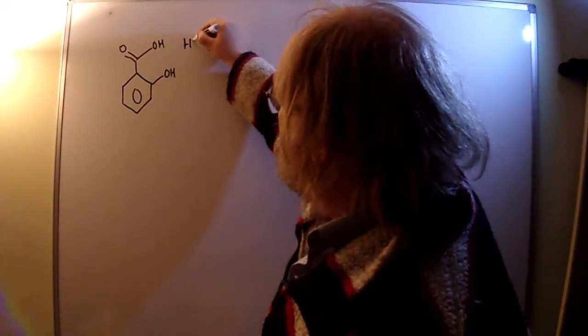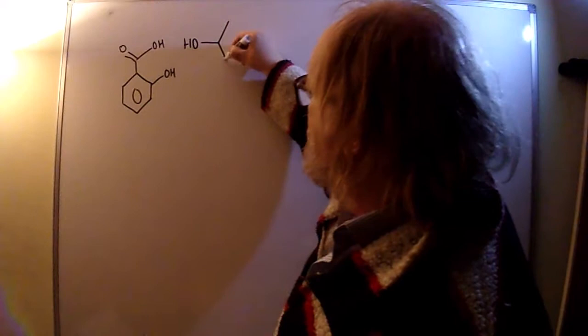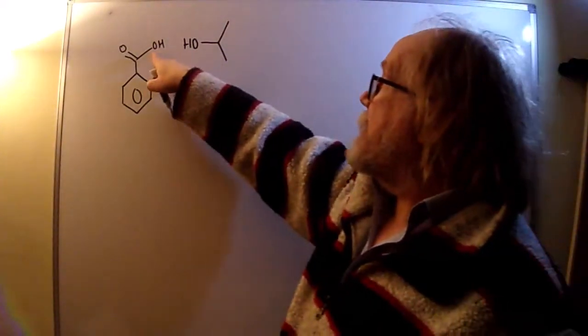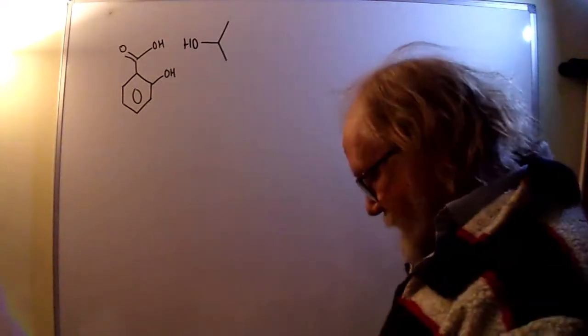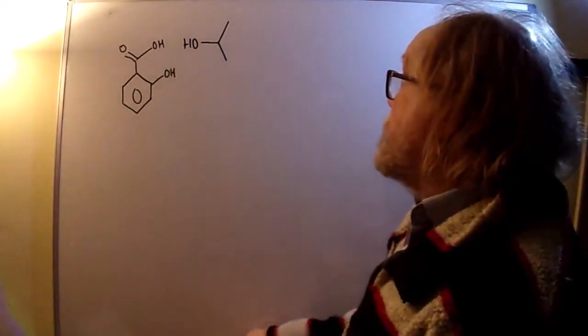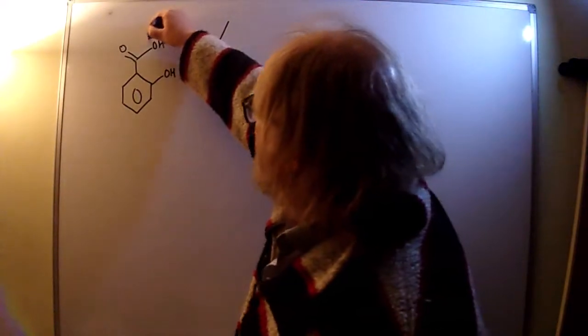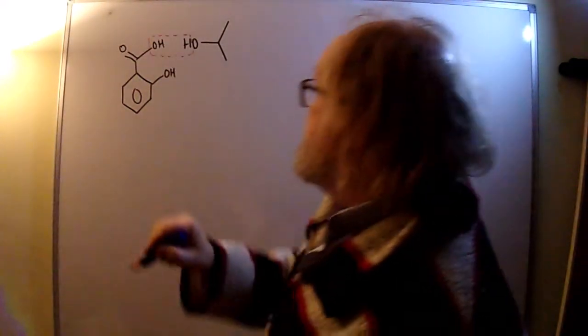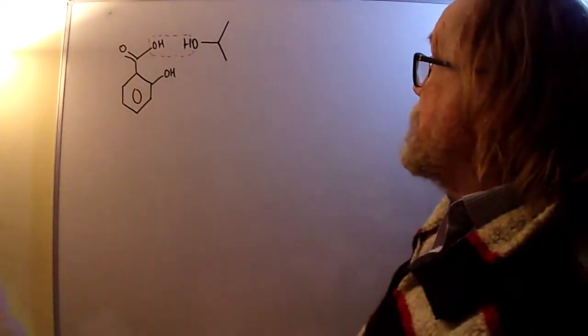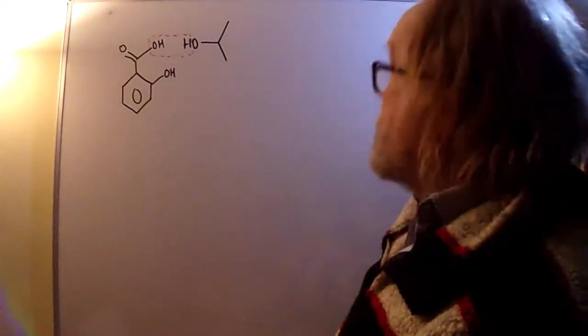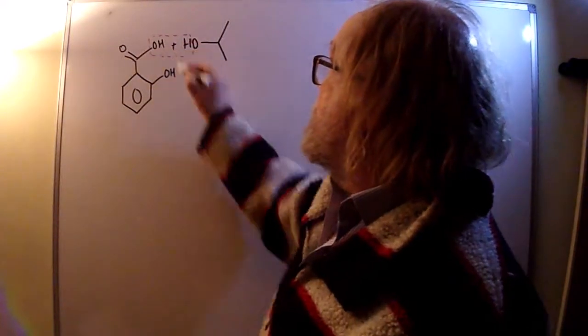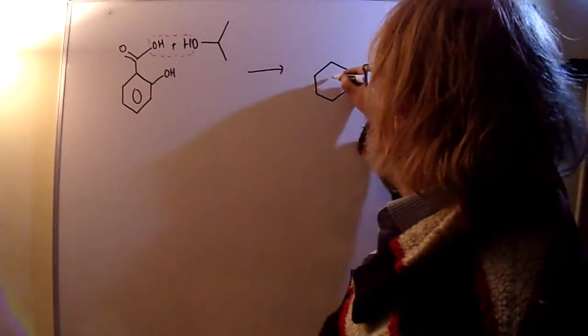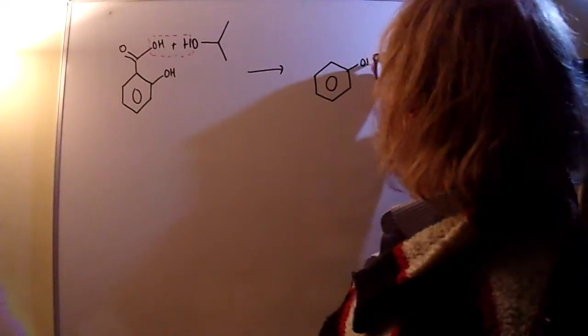Remember the recipe for esterification. So there's our propan-2-ol. The recipe says that the two OH groups condense together. We're going to lose water by condensing it out like that and join together the two bits to the left. So that's what we've got on the left-hand side.